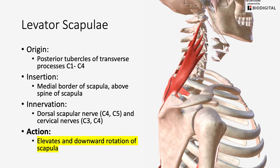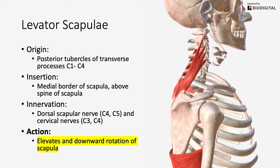This muscle has a slight angle coming from your spine going in a more posterior fashion, so it can hold a lot of tension, especially with forward head posture, and can be a contributor of cervicogenic headaches if you have excessive tension here that's compressing your cervical spine and some of the nerves.